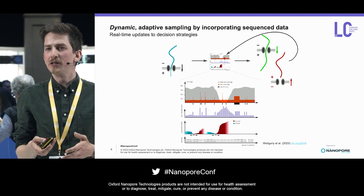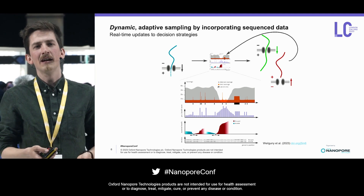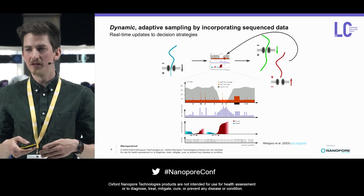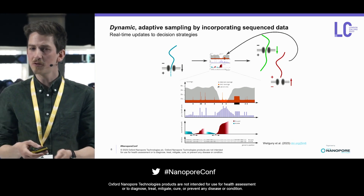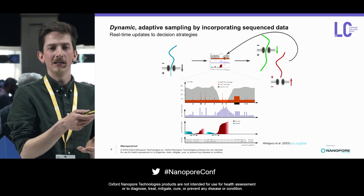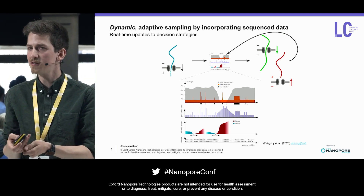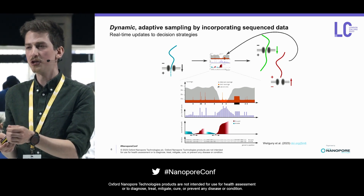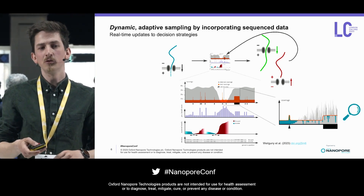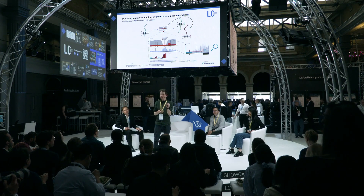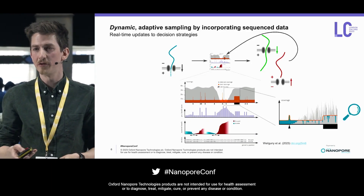More specifically, we do this with a model that keeps track of the already observed data, and then derives scores about the uncertainty that we have at each individual site of a genome. With those scores, we can calculate the benefits that we expect from any sequencing read at any position in the genome at that specific point in time. This allows us to use adaptive sampling to fill in the gaps or specifically target variants that we would like to sequence further.